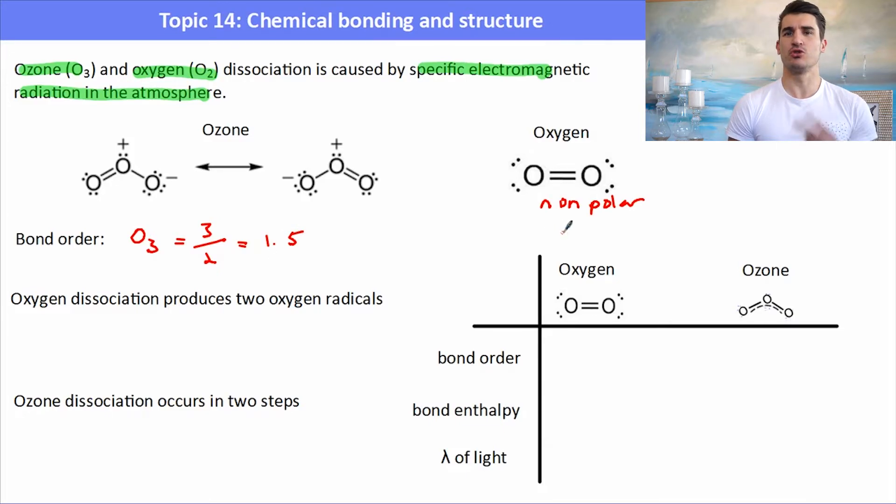It has two locations, so it has a bond order of 1.5. The oxygen has two bonds with one bond location so it has an order of two. So the oxygen has a stronger bond order.